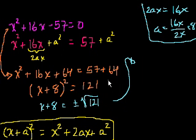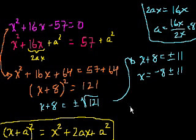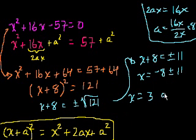So we get x plus 8 is equal to plus or minus 11. And so x is equal to minus 8 plus or minus 11. So x could equal minus 8 plus 11, which is 3. And if I took minus 8 minus 11, x could also equal minus 19.